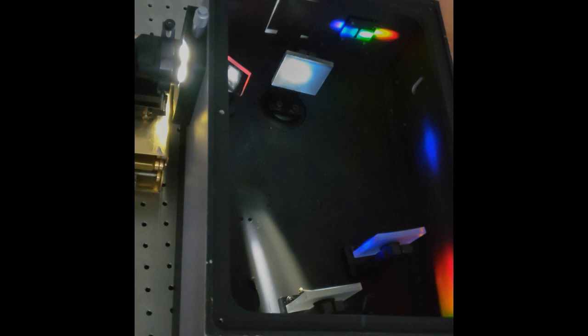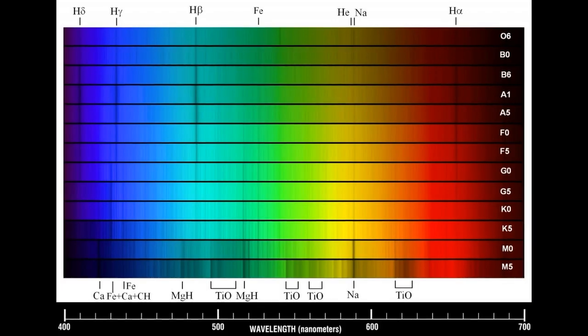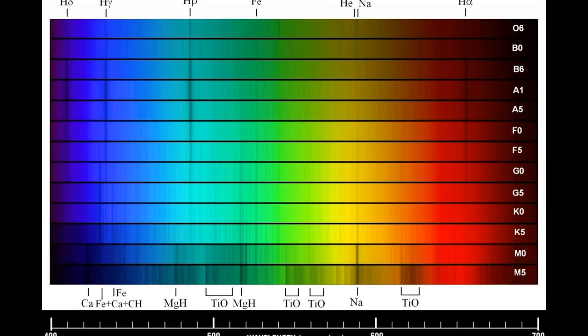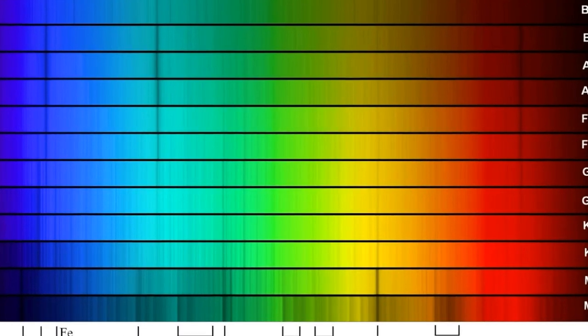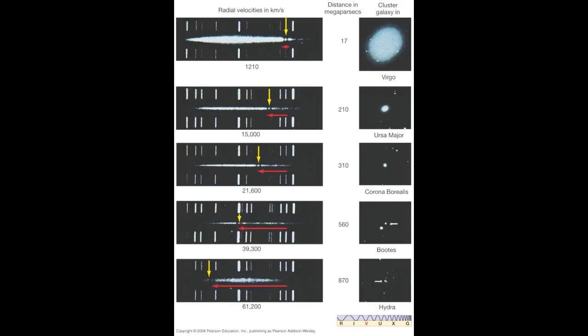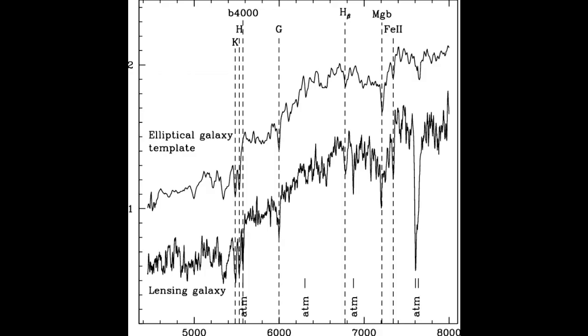By using an instrument called a spectrograph, astronomers can tease out all kinds of information about an object, including its temperature, motion, strength of magnetic fields, and even what it's made of. For this kind of work, the more light you have to work with, the better, especially for very faint, far-off objects, thus the need for larger apertures.